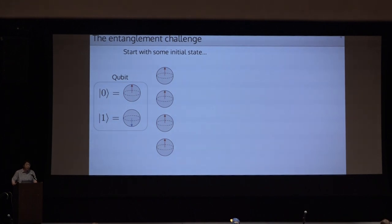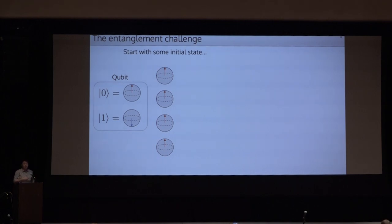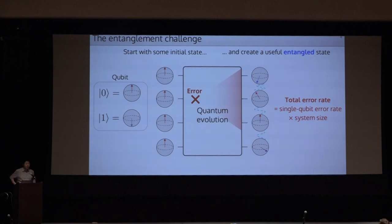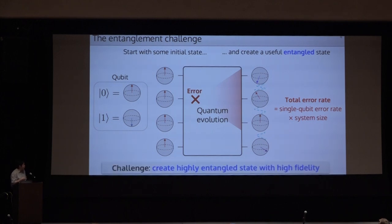In reality, creating large-scale entanglement is very challenging. In a quantum simulator, we start with a simple product state of qubits in the ground state, then perform quantum gates or quantum evolution to create useful entangled states at a later time. However, experimental quantum devices are not isolated from the environment — because of noise and errors, the entanglement will be destroyed. It is therefore very challenging to scale up entanglement, and larger devices are more prone to these errors. The challenge is to create highly entangled states with high fidelity.